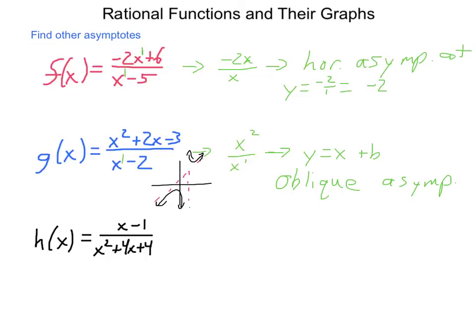Next, h of x. h of x is x minus 1 divided by x squared plus 4x plus 4. Looking at our lead terms, we have x to the first divided by x squared. Our denominator is larger, so that automatically results in y equals 0 being a horizontal asymptote. We're going to have vertical asymptotes. If we factor this denominator, we get x plus 2 squared. We will have a single vertical asymptote at x equals negative 2, because that is what will make the denominator 0 but not the numerator.